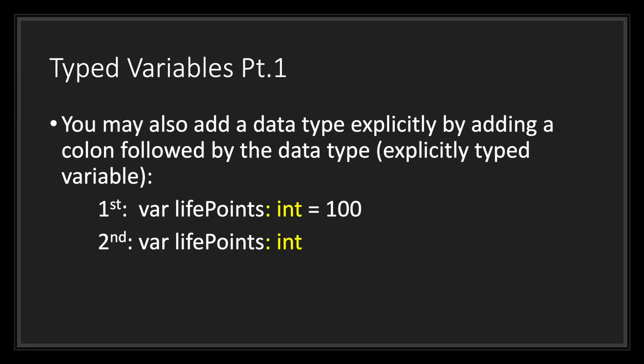Let's go ahead and take a look at typed variables. You may add a data type explicitly by adding a colon symbol followed by the data type. Let's take a look at two examples. There are two ways to declare a typed variable. You can either declare a typed variable with or without assigning it a value.